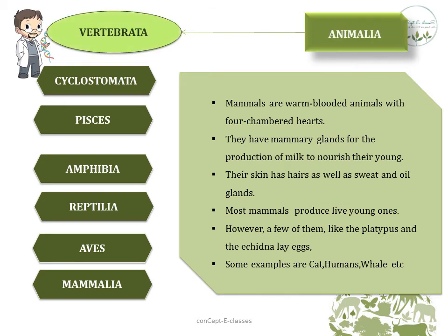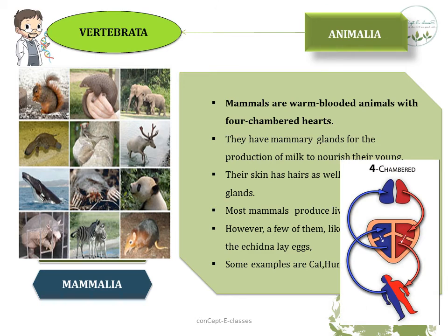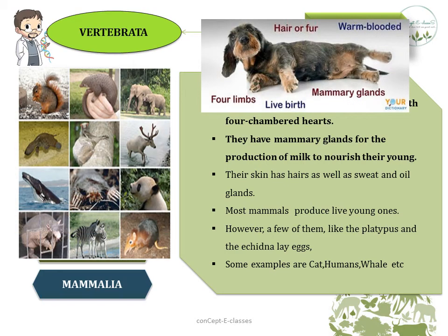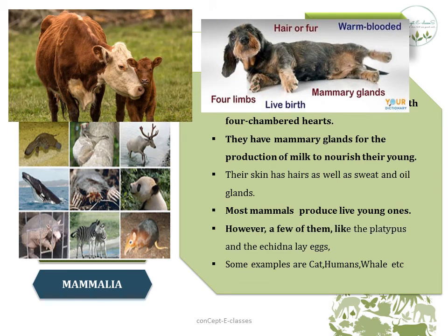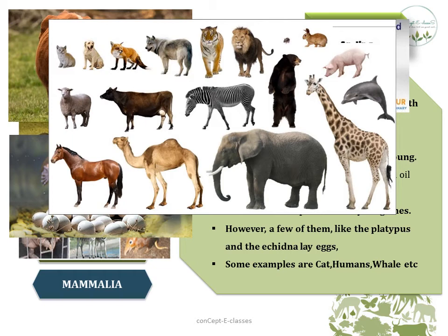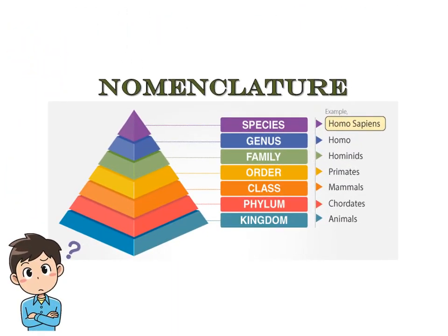The last class under Vertebrata is Mammalia. Mammals are warm-blooded animals with four-chambered hearts. They have mammary glands for producing milk to nourish their young ones. Their skin has hair, sweat glands, and oil glands. Most mammals produce live young ones; however, some like the platypus and echidna lay eggs. Examples of mammals are cats, humans, elephants, giraffes, and whales.